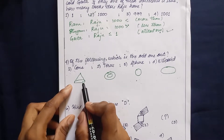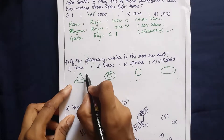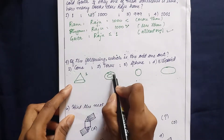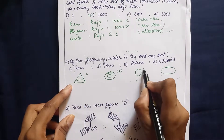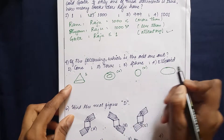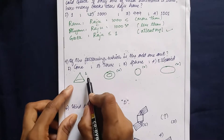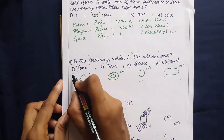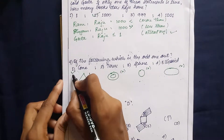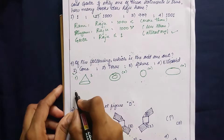Considering the number of edges: a cone has one edge, a torus has zero edges, a sphere has zero edges, and an ellipsoid has zero edges. Based on the number of edges, the cone can be considered the odd one out. This is one method.